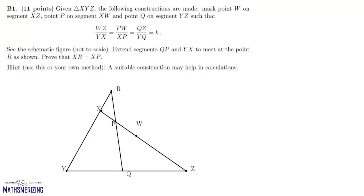We come to Section B. Given a triangle XYZ, the following constructions are made: mark point W on segment XZ, point P on XW, and Q on segment YZ such that WZ upon YX equals PW upon XP equals QZ upon YQ equals k. Extended segments QP and YX meet at point R. We need to show that XR equals XP.